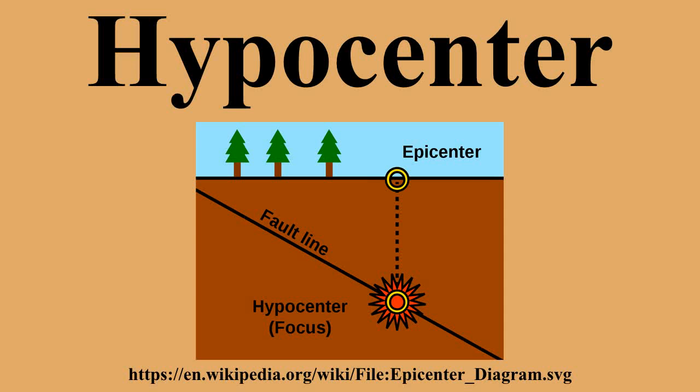Computing the hypocenters of foreshocks, main shock, and aftershocks of earthquakes allows the three-dimensional plotting of the fault along which movement is occurring. The expanding wave front from the earthquake's rupture propagates at a speed of several kilometers per second.